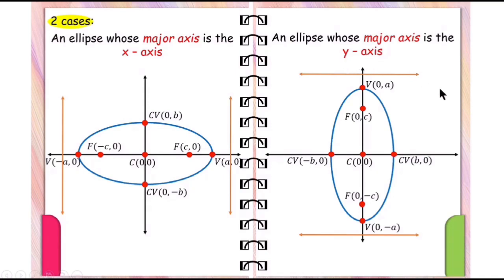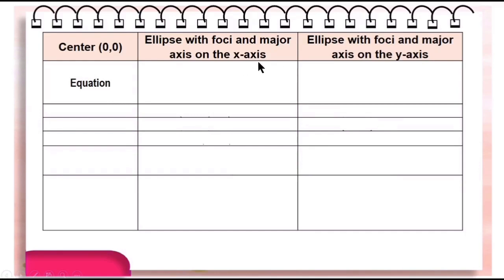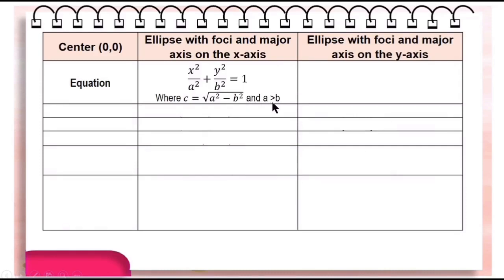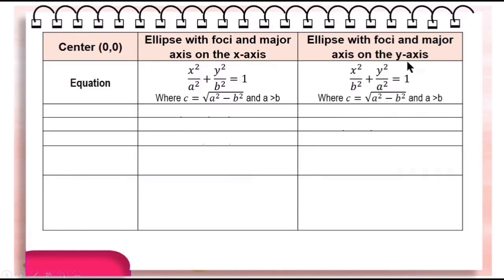The equation of an ellipse with major axis on the x-axis is x squared over a squared plus y squared over b squared equals 1, where c is equal to the square root of a squared minus b squared, and a should be greater than b. Here, a represents the vertices, b the co-vertices, and c the foci. While the equation is x squared over b squared plus y squared over a squared equals 1, if the major axis is on the y-axis.